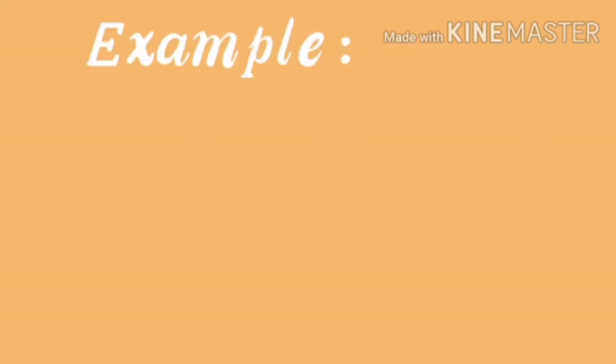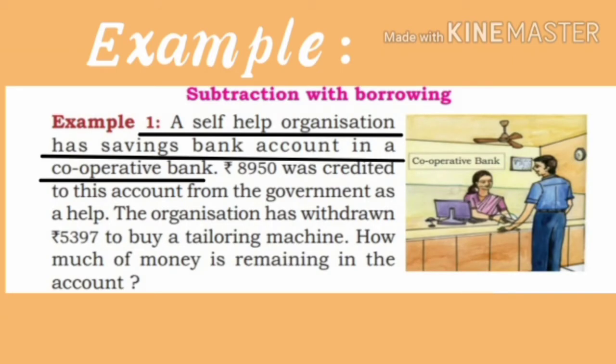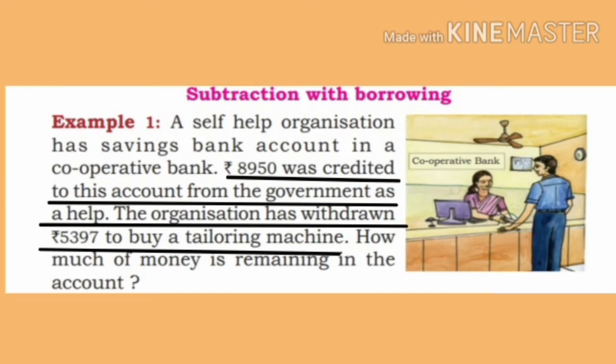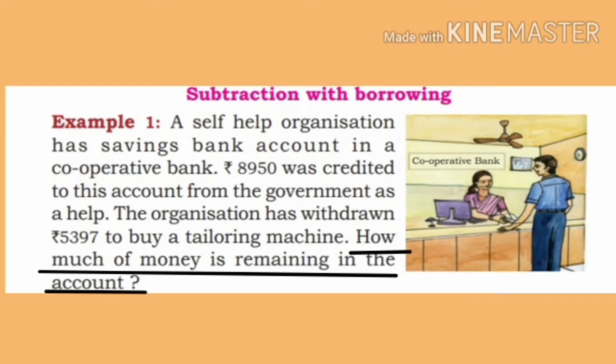Observe the example, children. A self-help organization has a savings bank account in a cooperative bank. Rupees 8,950 was credited to this account from the government as a help. The organization has withdrawn rupees 5,397 to buy a tailoring machine. How much money is remaining in the account?